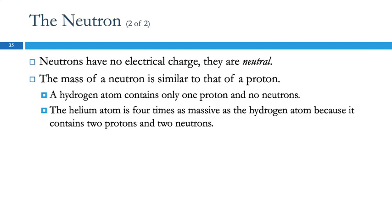The mass of a neutron is extremely similar to that of a proton — for most purposes we can say they're the same. This explains the difference in masses. A hydrogen atom has one proton and no neutrons. A helium atom is four times as massive because it has two protons and two neutrons — four massive particles compared to hydrogen's one.